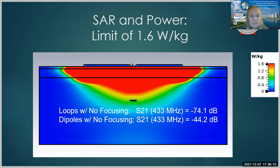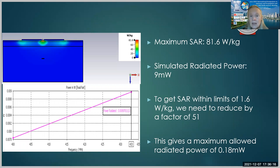Now, if we need to limit the SAR to 1.6 watts per kilogram, which we do, the maximum SAR shown in the previous picture was 81.6 watts. And that's simulated with nine milliwatts of power. So to get the SAR down to within limits of 1.6, we'd need to decrease this by a factor of 51, which would give a maximum allowed radiated power of 0.1 milliwatts.